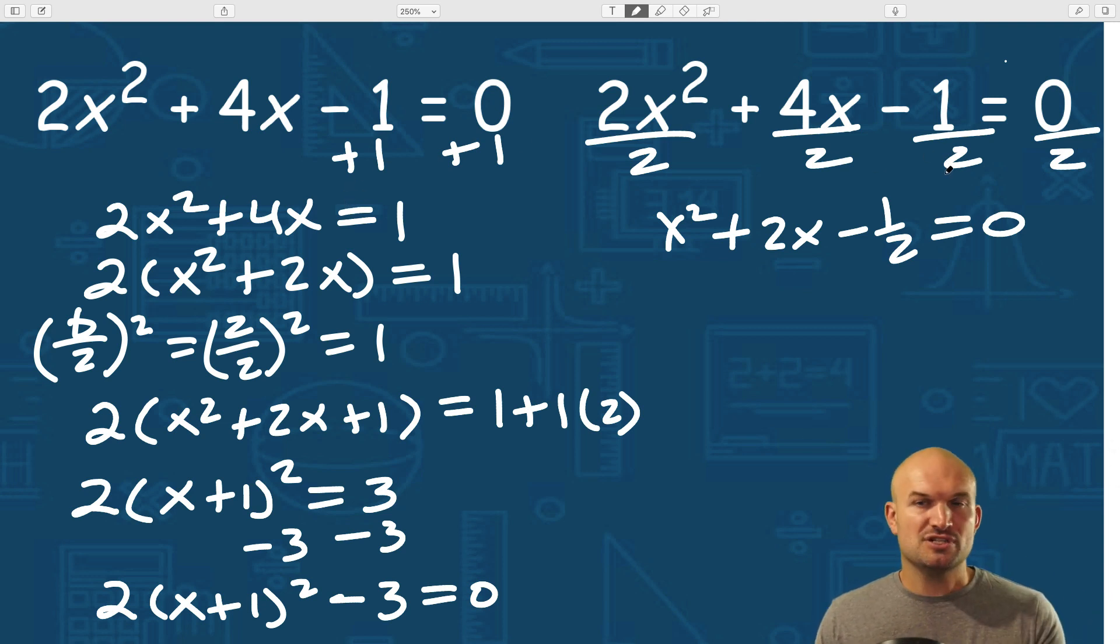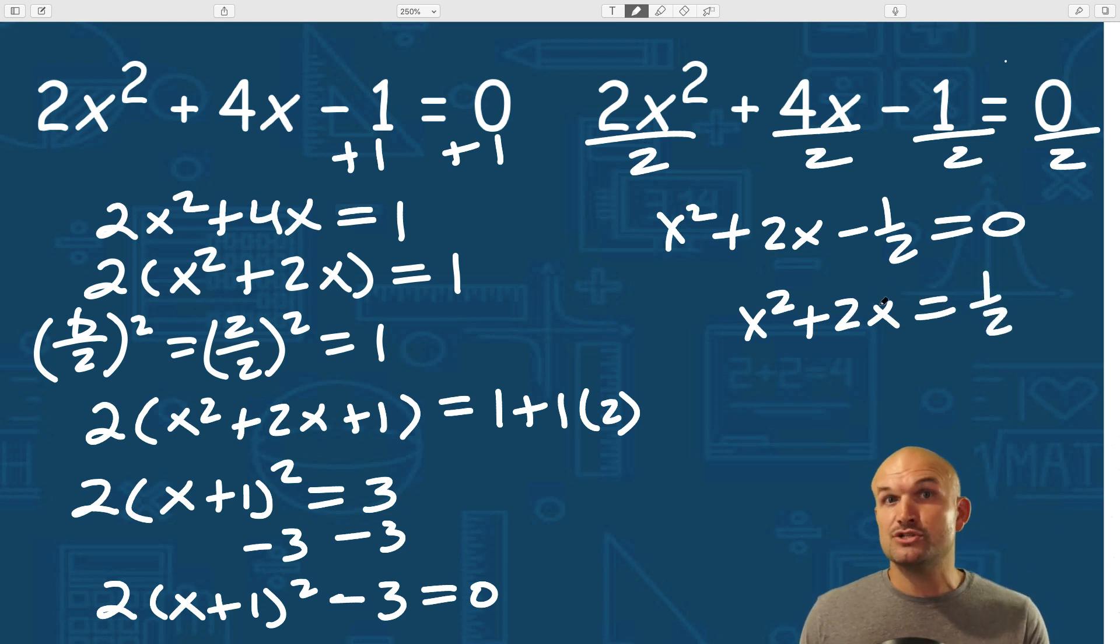Now I could have added the one to the first step if I wanted to, but again, like what does it really matter if you have a minus one half or a equals positive one half? Now I will say it is kind of beneficial, or at least in my opinion, I like to have the two x to the other side just because I want to complete the square with the x² + 2x.